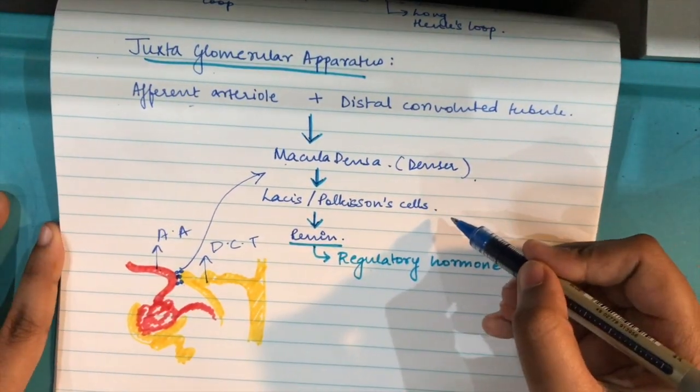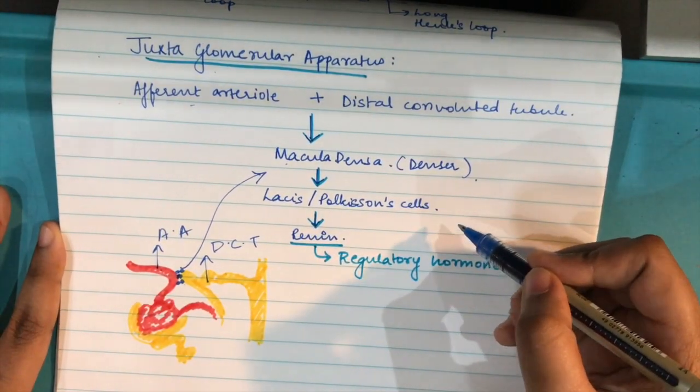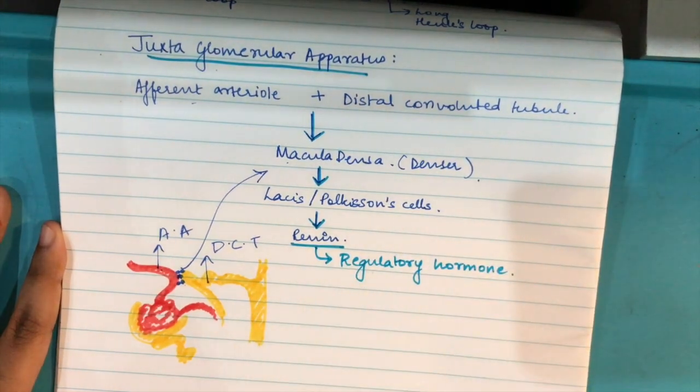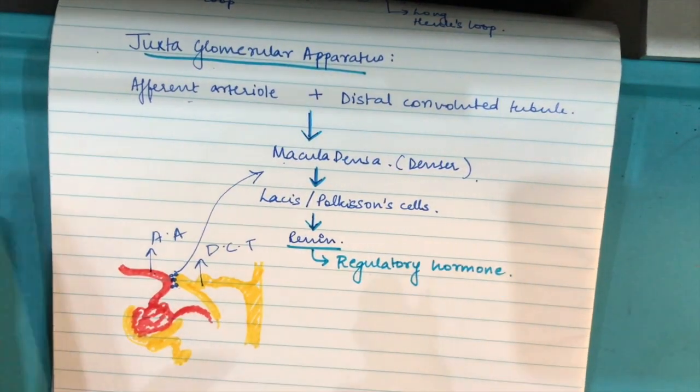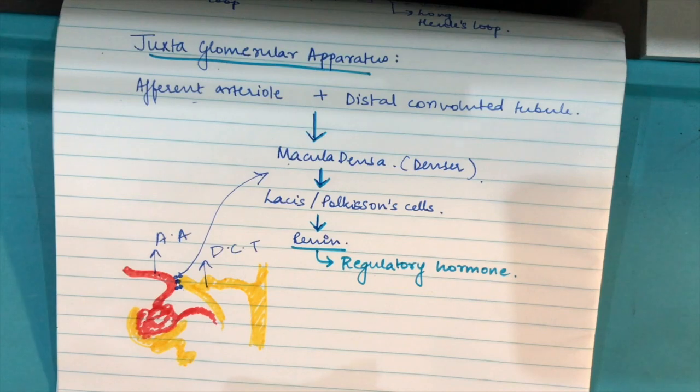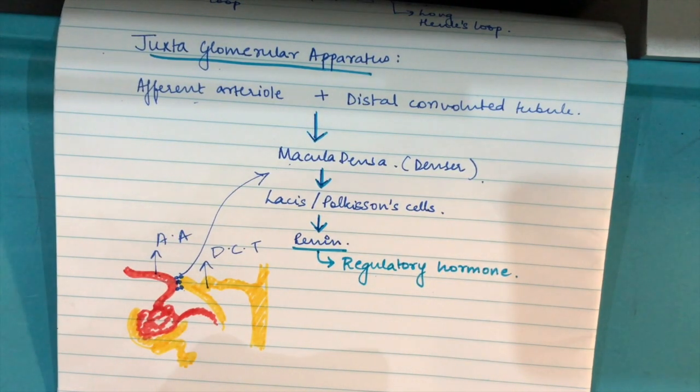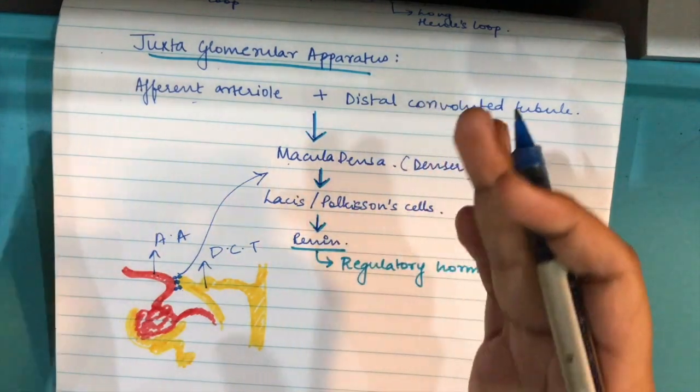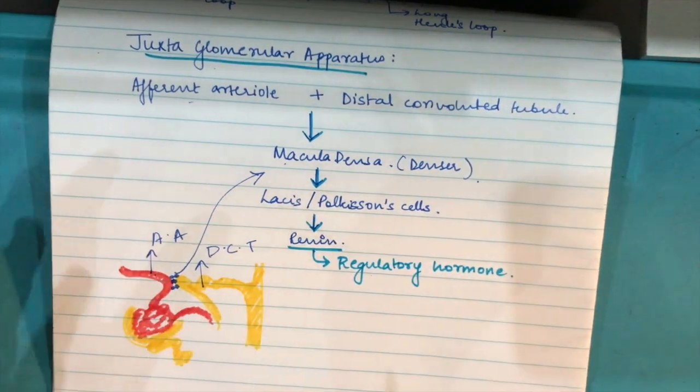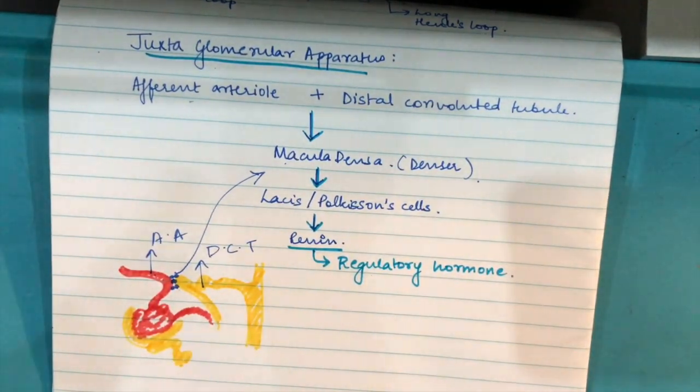These cells are known as macula densa. This is because they are denser compared to other cells. These cells are also known as polkisson cells and these cells produce a hormone which is renin. We will learn about the function of renin. It's very important to control the amount of urine that is being excreted out of the body and the amount of water that is being excreted out of the body. So this is juxtaglomerular apparatus and these are juxtaglomerular cells also known as macula densa or polkisson cells.